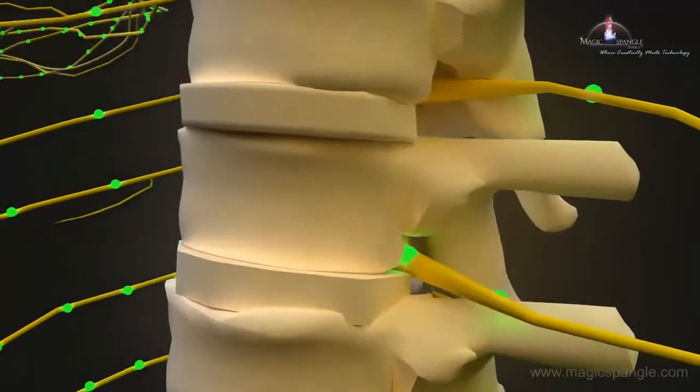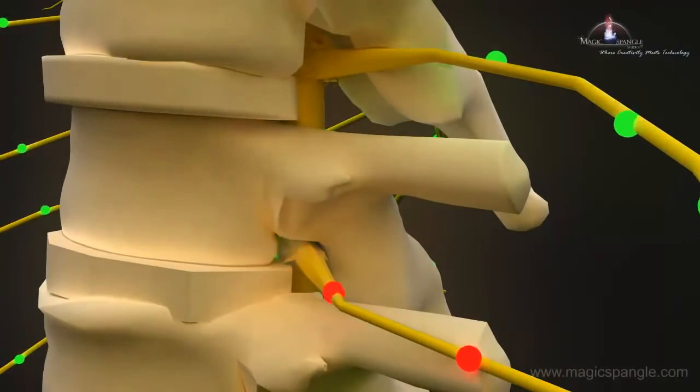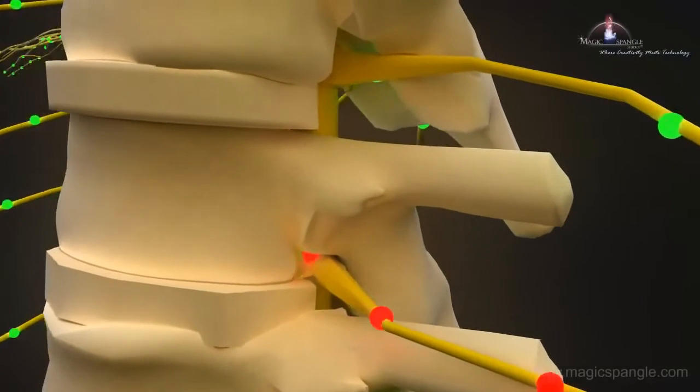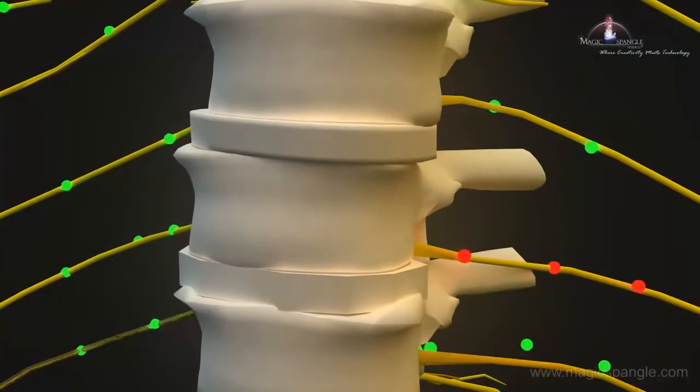When a subluxation occurs, your vertebrae can then press on these existing spinal nerves and interfere and block these nerve impulses. When this happens, nerve damage begins and your body starts to dysfunction. Although potentially painless at first, symptoms can develop rapidly.